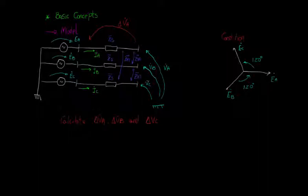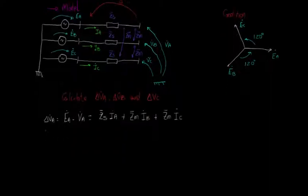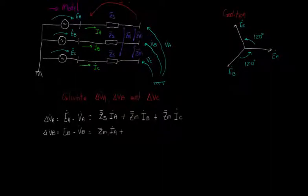It's quite simple to see that if we apply KVL in this model, we can write that ΔVA is equal to EA minus VA, which is equal to ZS times IA plus ZM times IB plus ZM times IC. For the other two phases, we have something similar.